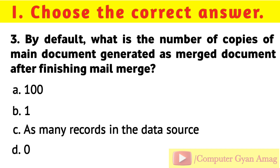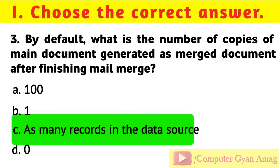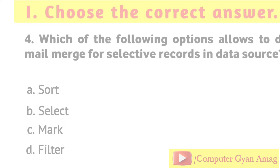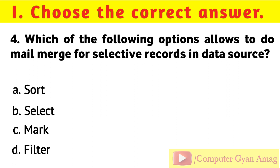Question 3: By default, what is the number of copies of the main document generated as a merged document after finishing mail merge? Your options are: A) 100, B) 1, C) As many records in the data source, D) 0. Correct option is C: As many records in the data source.